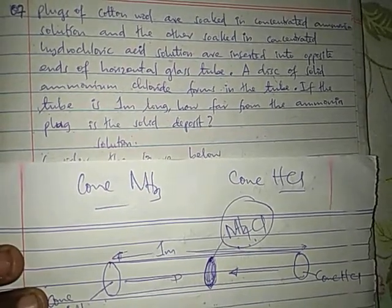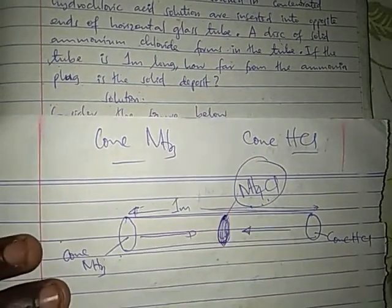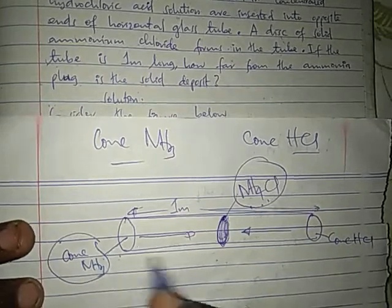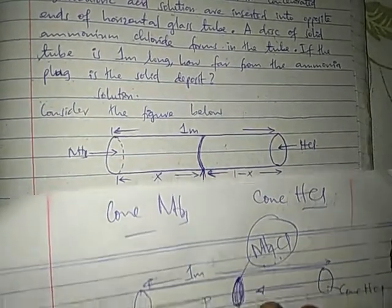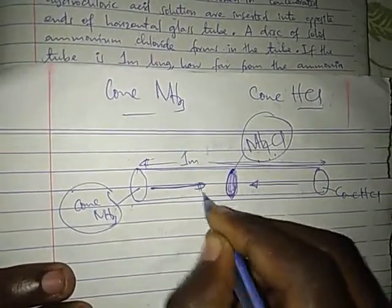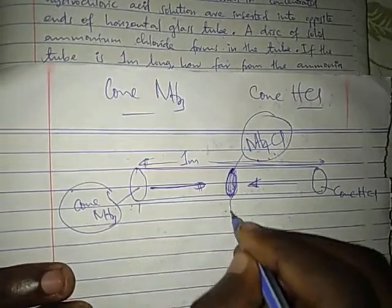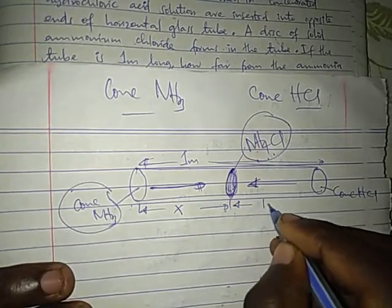They ask: how far from the ammonia plug is the solid deposit? The interpretation is that it depends on the rate going this way and the rate coming this way until they meet somewhere. Now let the distance from ammonia to the plug be x, and then the distance will be 1 minus x.